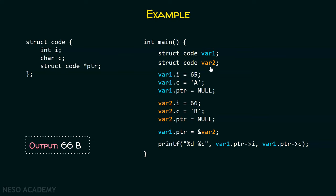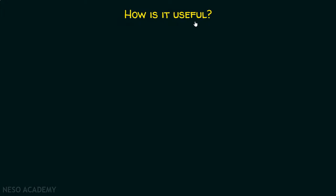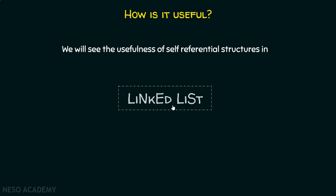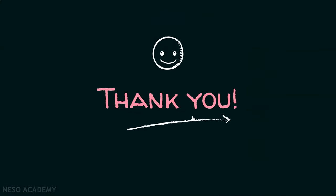This is possible because struct code has a pointer pointing to a struct code type, so I declared two variables of that type and stored the address of var2 within var1's pointer. This is what self-referential structure is all about. We will see the usefulness of self-referential structures when we discuss linked lists. Thank you for watching this presentation.